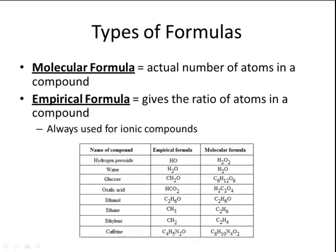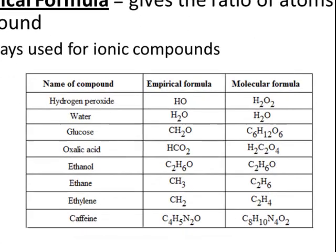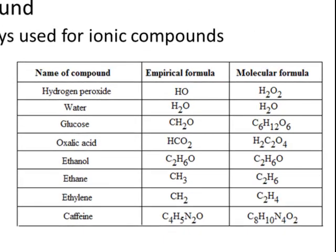An empirical formula is always used for ionic compounds because we're dealing with large crystal lattice structures. But either type of formula can be used with molecular compounds. The table at the bottom shows several examples of empirical formulas versus molecular formulas.